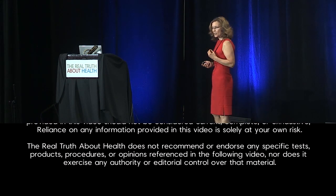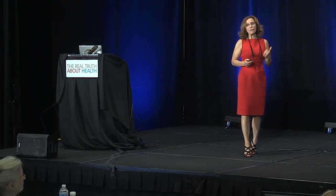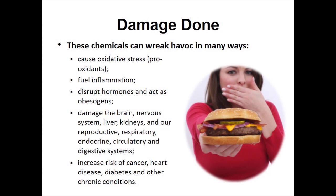The damage done by these chemicals is unbelievable. They cause oxidative stress, fuel inflammation, disrupt hormones, act as obesogens, and are neurotoxic — damaging the brain and nervous system. They also damage the liver, kidneys, and reproductive systems. Every body system is damaged by these compounds, and they increase our risk of every chronic disease we know of.